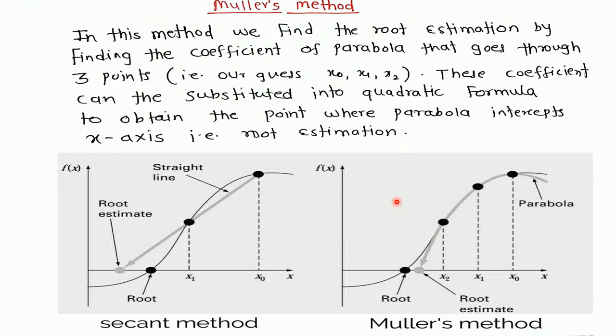Actually, Muller method is the generalization of the secant method. Instead of starting with two initial approximations, Muller method starts with three initial approximations to the root. In secant method, we have seen that the root is estimated by projecting a straight line to x-axis through two function values. But in Muller method, we are taking a similar approach but project a parabola through three points.